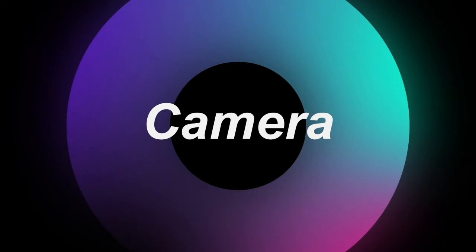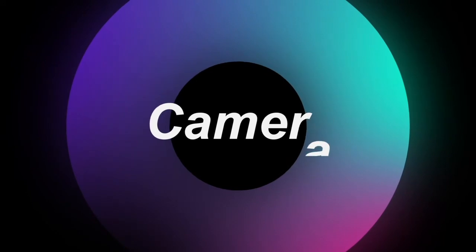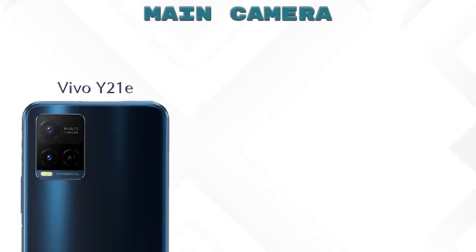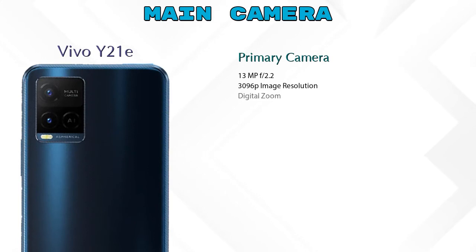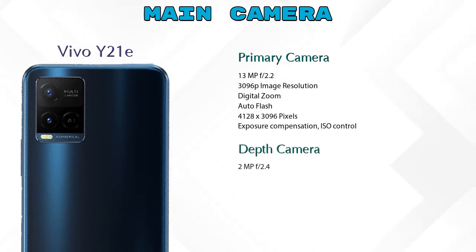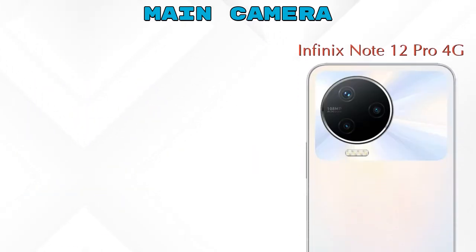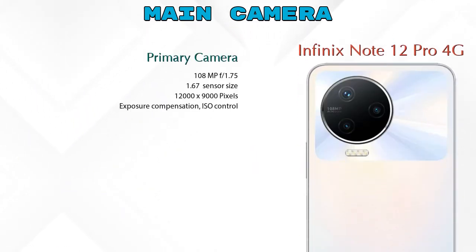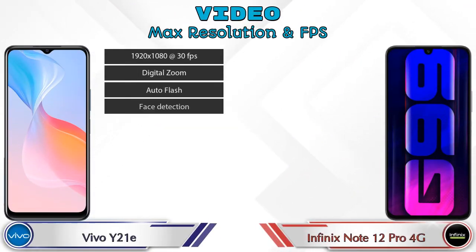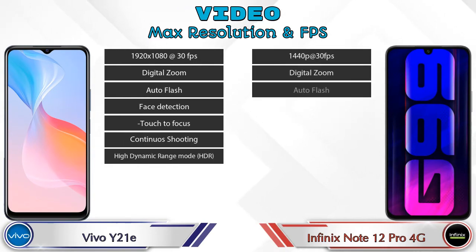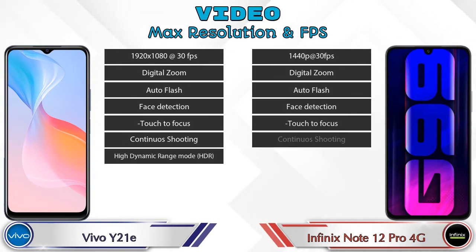Now let's see the detail about our favorite feature: camera. For the rear camera, the Y21E has two cameras — a primary camera and a depth camera. The Note 12 Pro 4G has three cameras — a primary camera, a depth camera, and an AI lens. For video camera features, both phones have seven different types of features available.